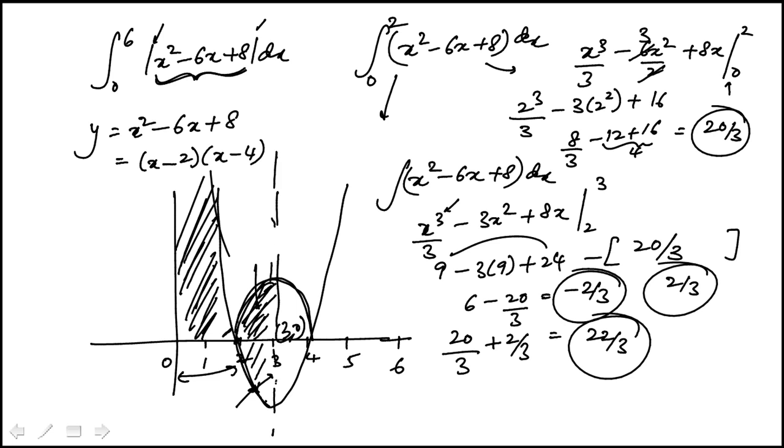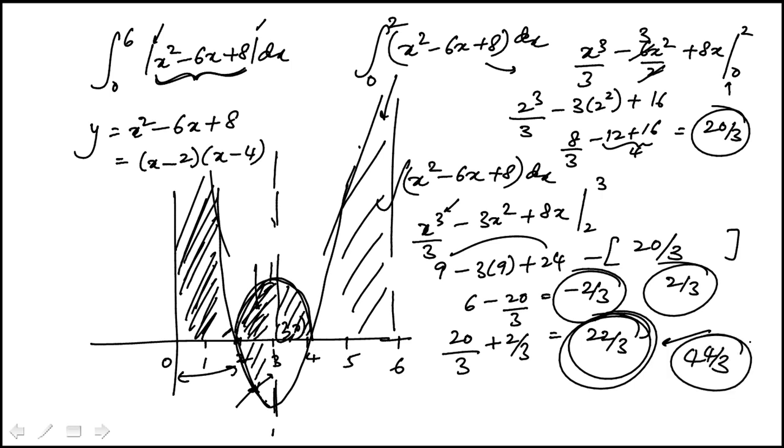And remember, it's symmetric about x, x equal to three, which means I'll get the same sum on this side going all the way to six. So all I have to do is to just double that, which is forty four over three. And that is answer choice C.